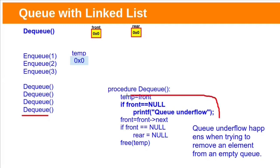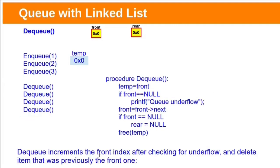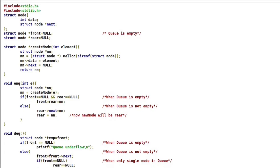To handle that we need to add this logic: if front equals null, raise the error queue underflow. Here front equal to null means queue is empty and we cannot perform dequeue, so raise this error queue underflow. Similar to array implementation, we need to advance the front after checking for underflow condition and delete the node that was previously at the front. This is the complete program for queue implementation with linked list.